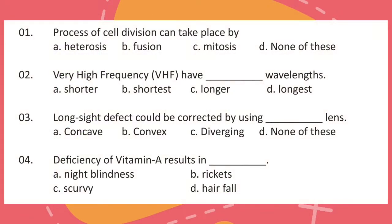Question 1: Process of cell division can take place by? Question 2: Very high frequency (VHF) have dash wavelengths. Question 3: Long sight defect could be corrected by using dash lenses. Question 4: Deficiency of vitamin A results in?